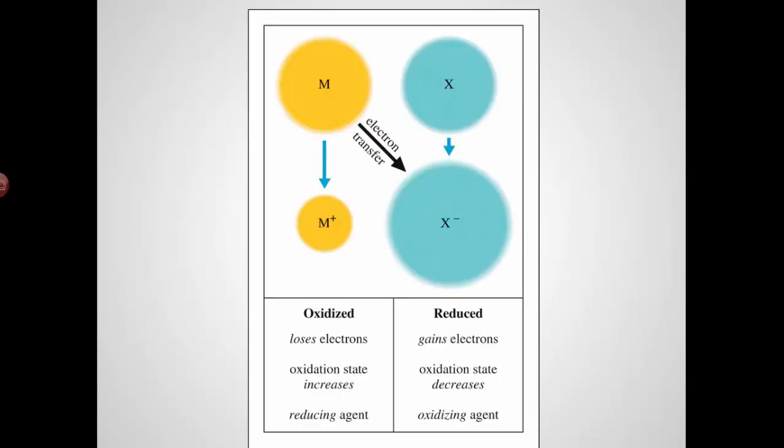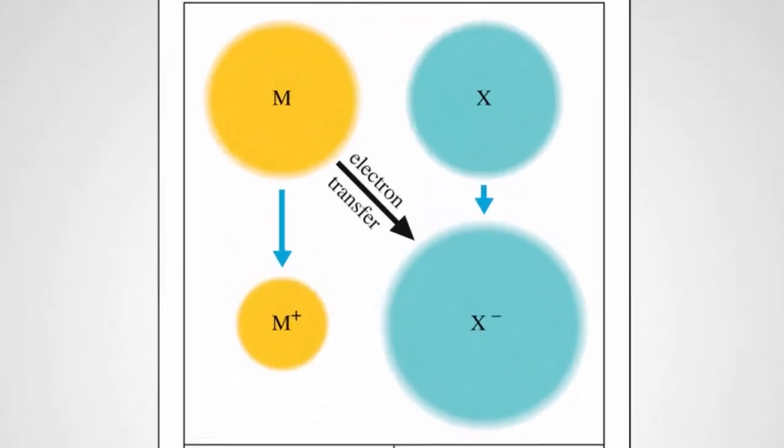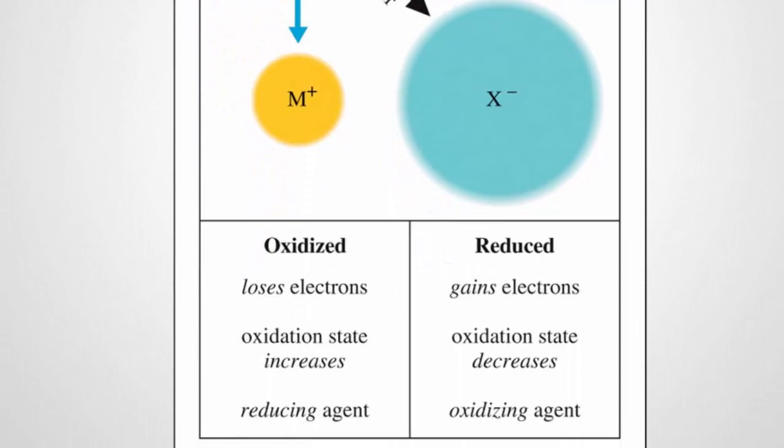The basic idea that you need to remember here is the definition. Oxidation occurs when something loses electrons. It becomes more positive because electrons are negative. Its oxidation state will increase. The thing that is oxidized is also called the reducing agent because it causes the reduction.